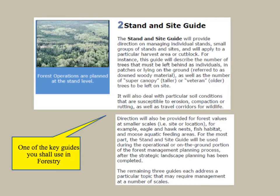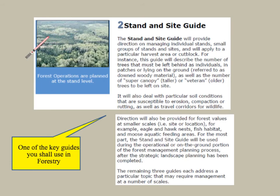One of the key guides you'll use in forestry is the stand and site guide, especially in annual forest planning. It's a very all-inclusive book, excellent for talking about things at a stand level and at a site level. The guide is available online and talks about how to address situations like: how do I manage clumps of trees within a cut block, how many do I leave, and what is a good amount for different types of wildlife.